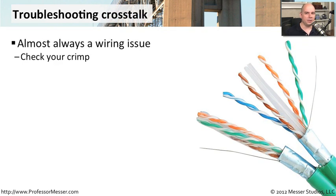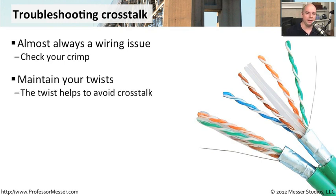If you're seeing very high crosstalk on your measurement equipment, it's probably a connection problem. It's likely that we don't have the right number of twists in our wire at a punch-down block or perhaps inside a connector. So check your crimps and your punch-downs to address the issue.